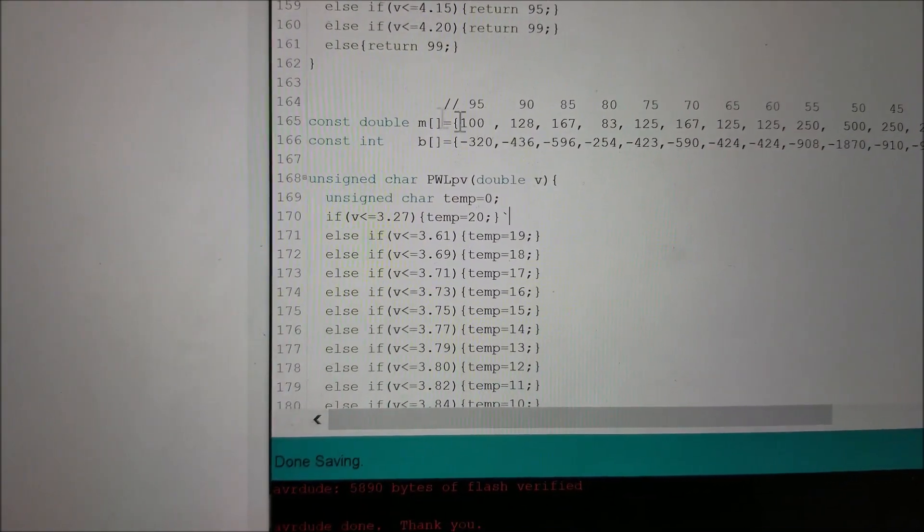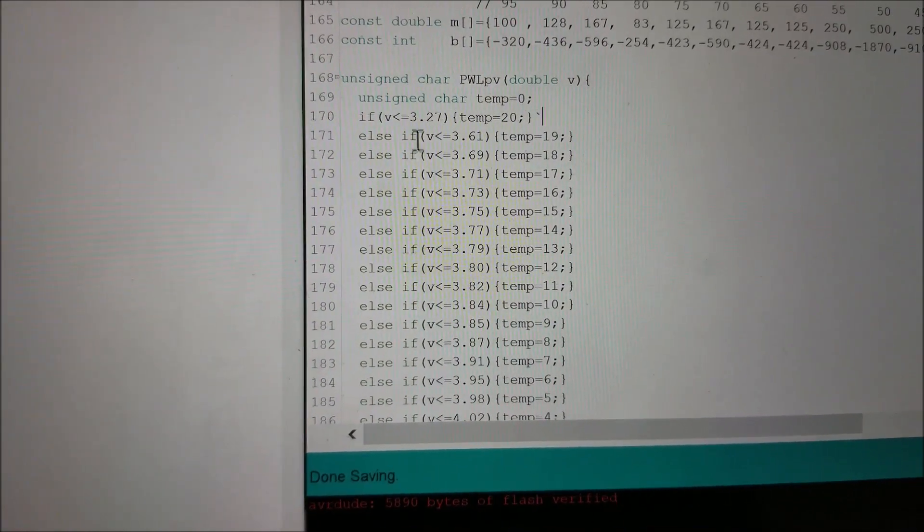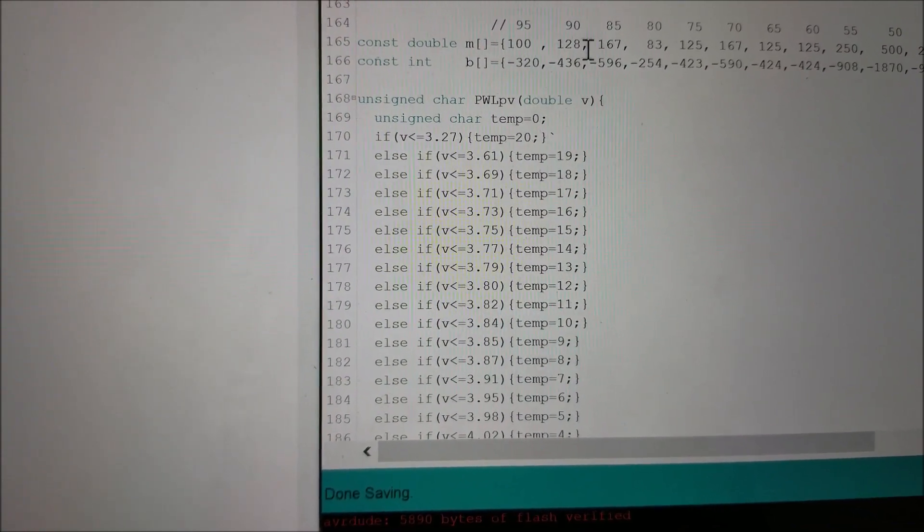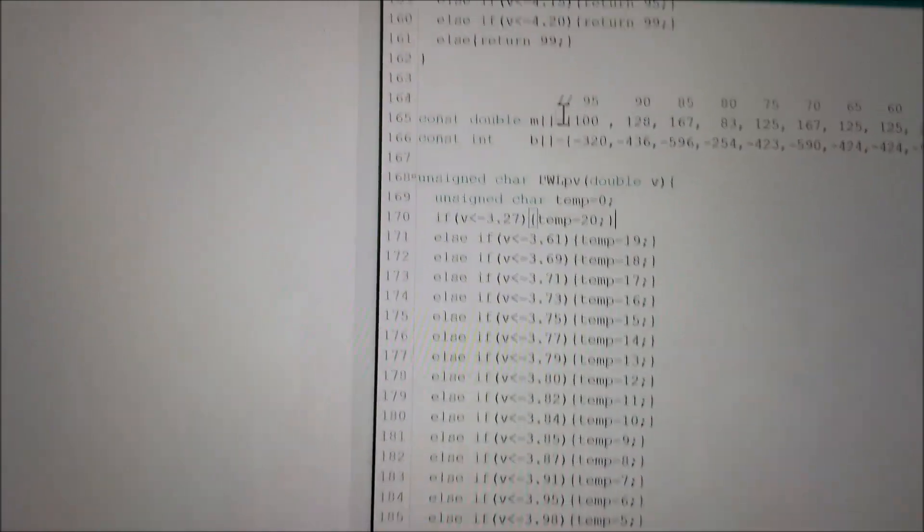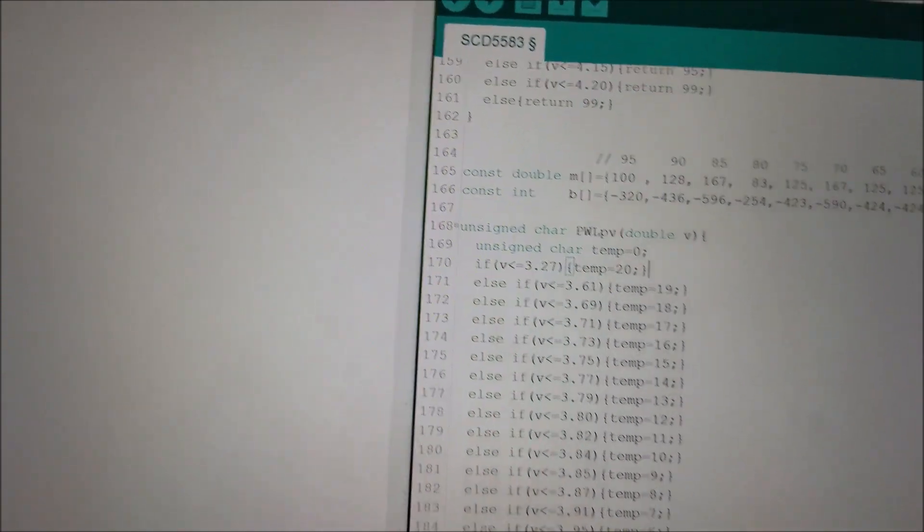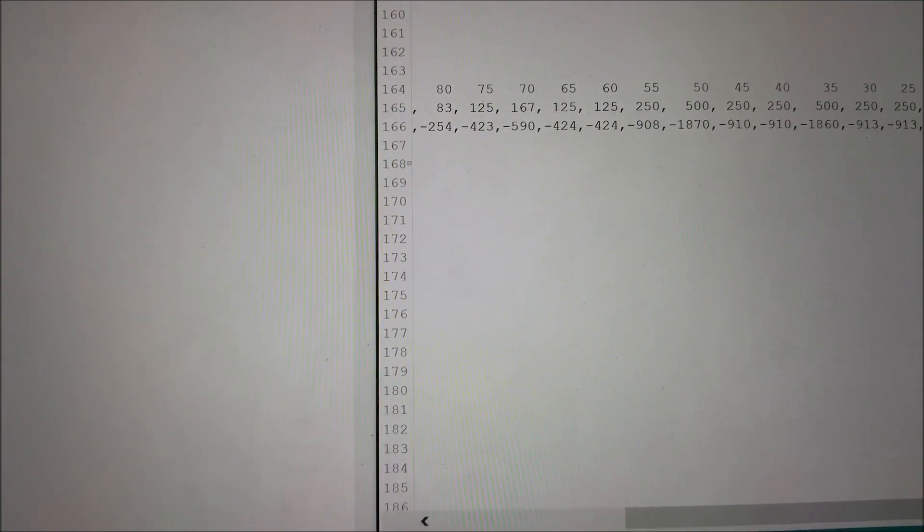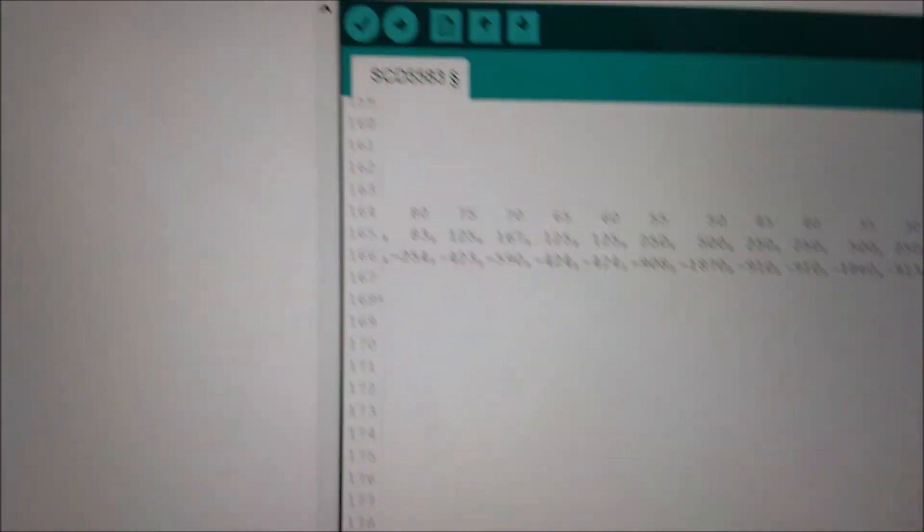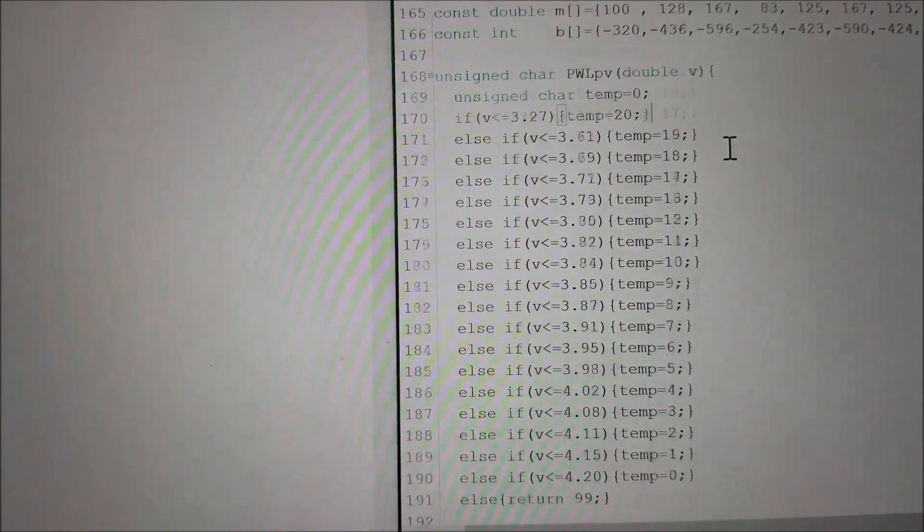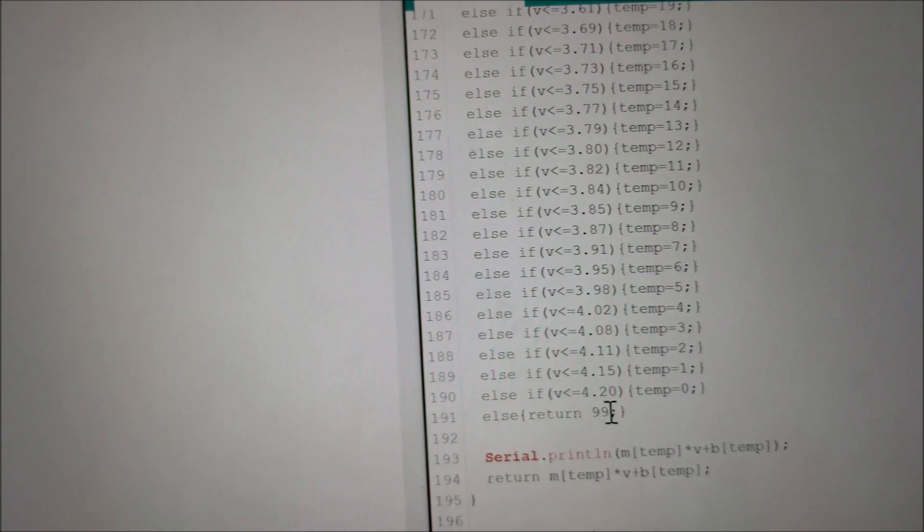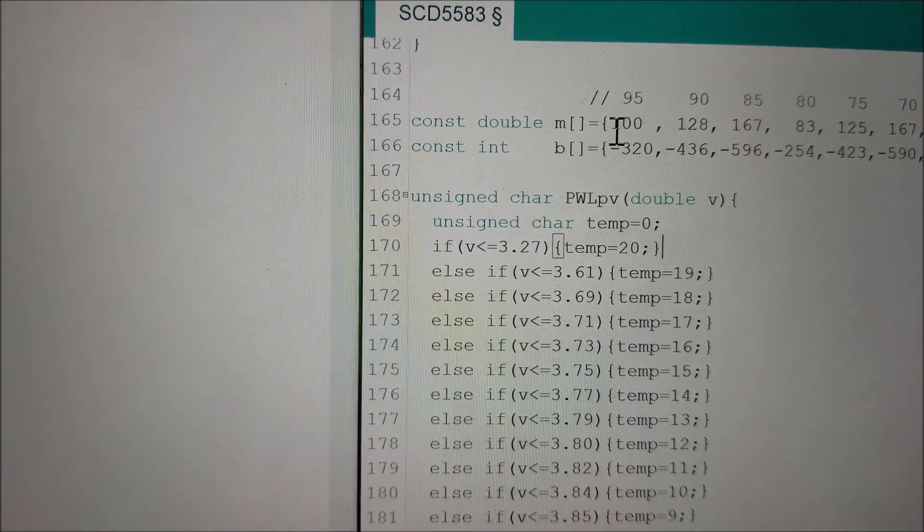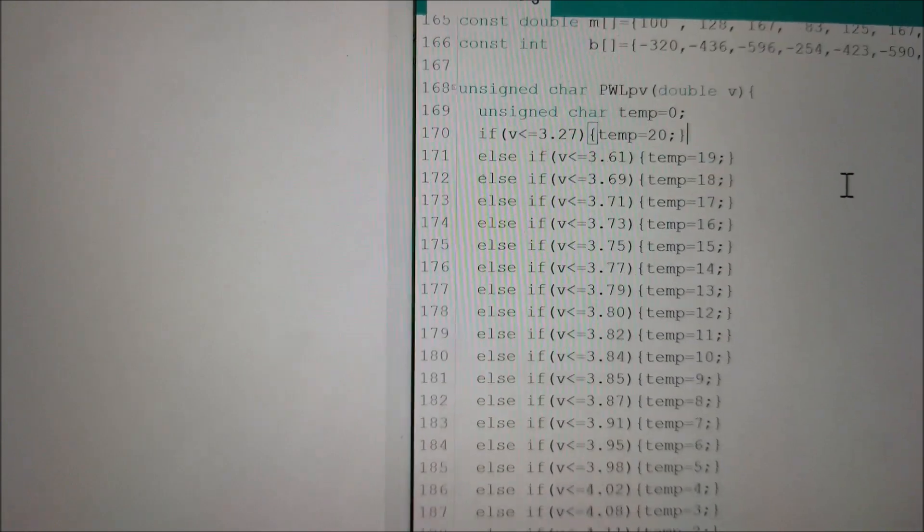And then my code here just determines within which of those ranges it's in and it calculates and it sets a temp value, which is actually the index to these arrays. So if it's less than 3.27 there, you can just scroll this over, that'll actually be within the zero and 5% range. So I actually want to choose the last element. So that's why temp gets set to 20 because it's index 20. However, once you go up, say it's pretty much full, you get a 4.2 volts. It'll set temp equal to zero. And that corresponds with the 95 to 100 percent range, which is the zeroth element of the array.